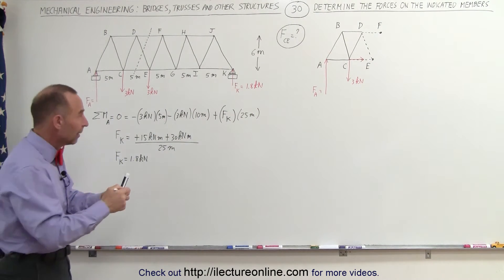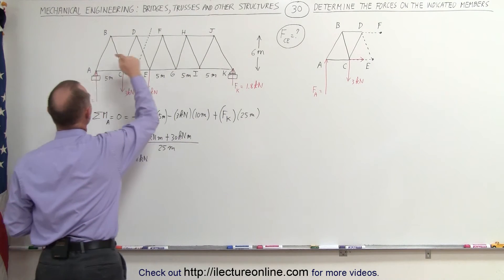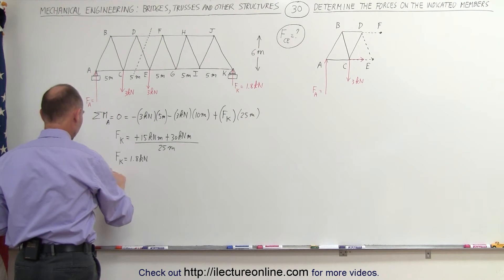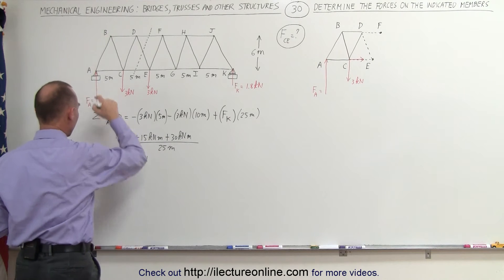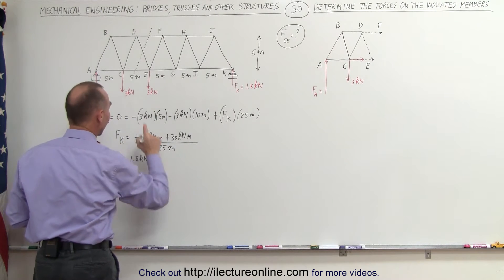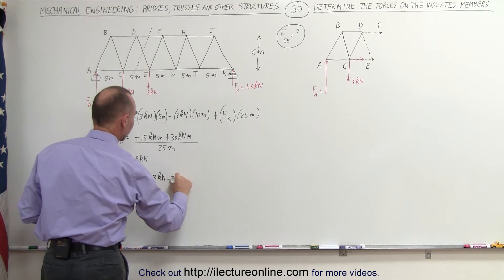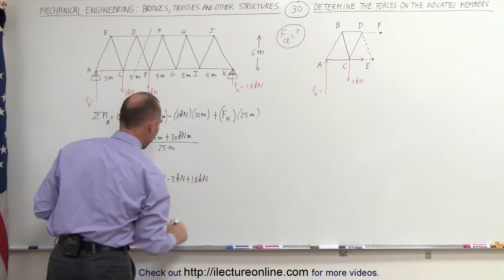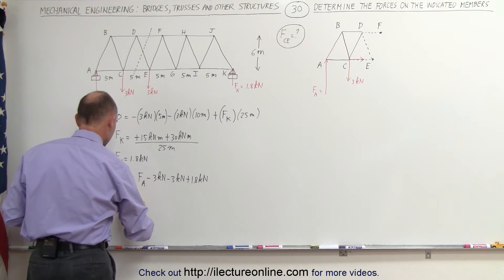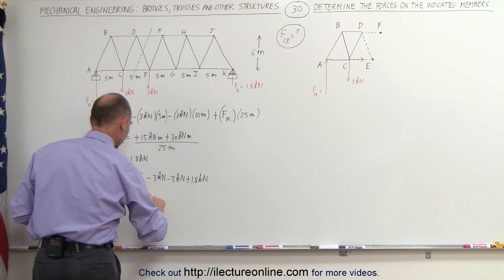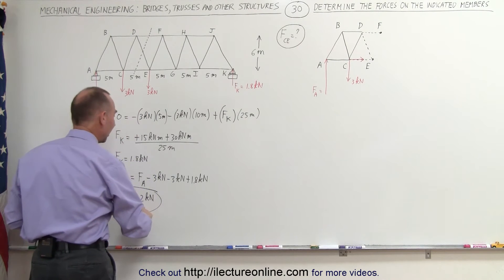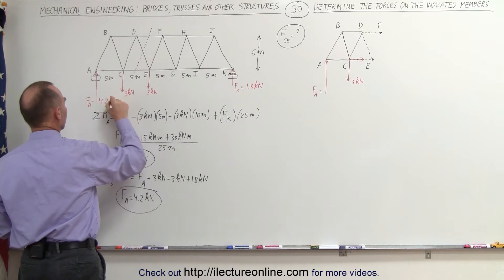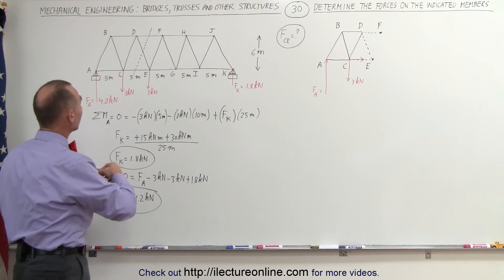Now we've determined F_K. We can also use the sum of the forces in the y-direction, which must equal zero: positive F sub A, minus 3 kilonewtons, minus 3 kilonewtons, plus 1.8 kilonewtons at point K. That's 6 minus 1.8, so F sub A equals 4.2 kilonewtons. Now we have both support forces, so let's plug in 4.2 kilonewtons and proceed to calculate the force between C and E.